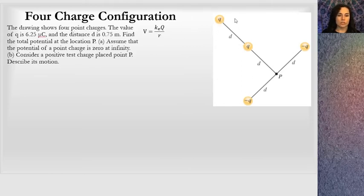I'm going to label these charges. I will call them A, B, C, and D. It says the drawing shows four point charges. The value of q, and each of them has, these are positive q's and these are negative q's. Q is 6.25 microcoulombs, so that's 10 to the negative 6. And the distance between them, this distance d, is 0.75. So when we think about distances to the point that we're looking at, it says find the total potential at point P.